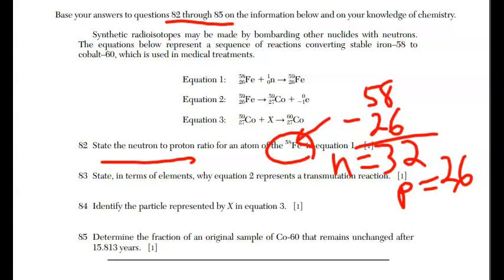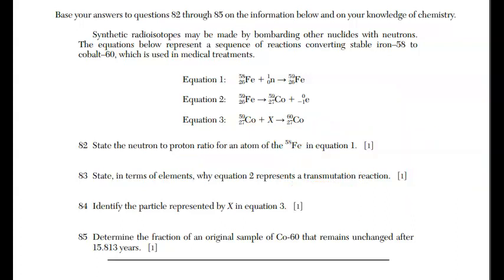For 83, it says, state in terms of elements. Why equation two represents a transmutation reaction. Let me erase this. In terms of elements now, remember, this is always important. It's transmutation because we have iron, 59, that is being transformed into cobalt, 59. That's transmutation.